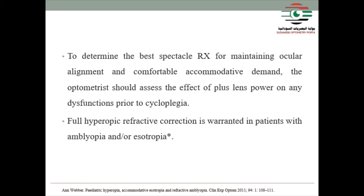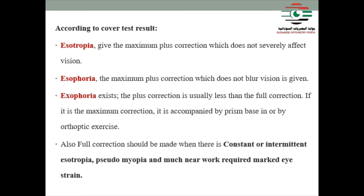Full hypermetropic refractive correction is indicated in patients with amblyopia and/or esotropia. According to the cover test, there are three conditions: if esotropia, give the maximum plus correction which does not severely affect vision; if esophoria, give the maximum plus correction which does not blur vision; if exophoria, the plus correction is usually less than full correction, and if maximum correction is given, it is accompanied by prism base-in or orthoptic exercise.